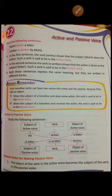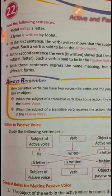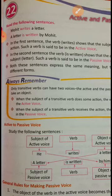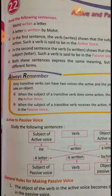Let's look at the example: 'Mohit writes a letter.' Mohit is the subject, 'a letter' is the object, and 'writes' is the verb. The tense is simple present. When we change the subject to the place of the object and the object to the place of the subject, the voice changes. In this first sentence, the verb 'writes' shows that the subject Mohit does the action — this is active voice.